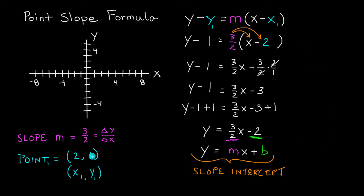We started with a point on the line and the slope, plugged that into the point-slope formula, did a little algebra, and ended up with a line in slope-intercept form. To graph this, we mark where it intersects the y-axis, which is b or negative 2. Starting at the origin on the y-axis we go down 2 units in the negative y direction — that's one point on our line. We also know that (2, 1) is a point on the line.